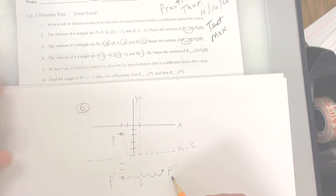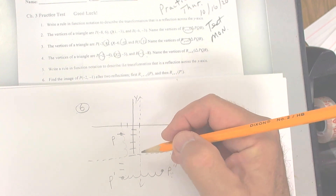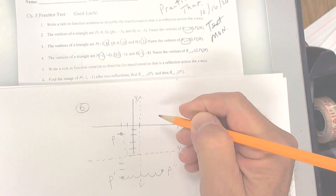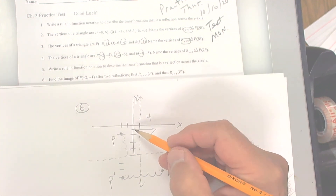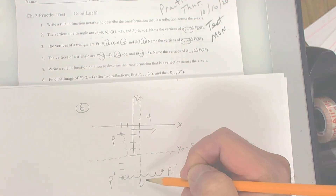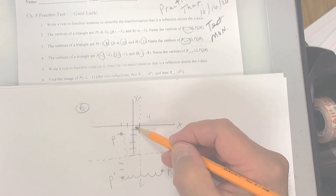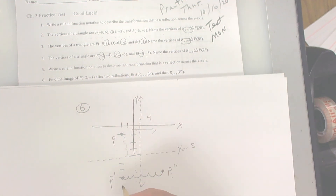Now describe where P double prime is. It looks like it's over 4 from the origin and then down 9. But let me back up — I had to redo that one carefully. Let me put P again at negative 2, negative 1, then reflect over y equals negative 5: that's 1, 2, 3, 4 spaces down, so P prime goes there. Then reflect over x equals 1: count 1, 2, 3 spaces over and put P double prime.